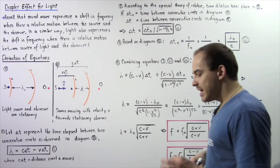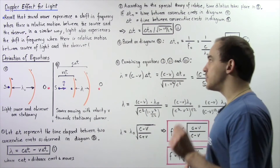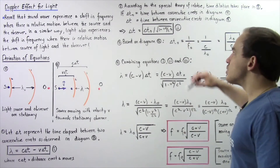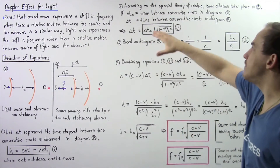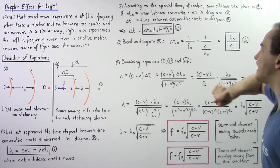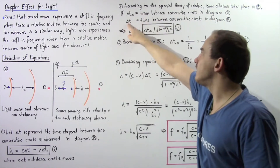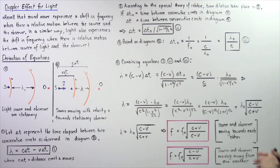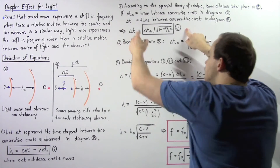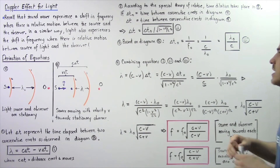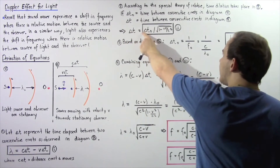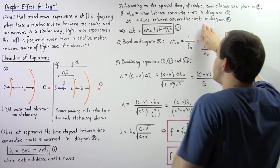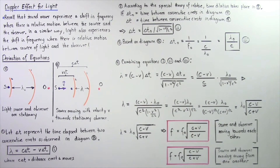Moving on to Step 2: based on the special theory of relativity, time dilation will take place in Diagram B. If we let delta T0 be the time interval between the two consecutive crests in Diagram B, then we can use the time dilation equation: delta T is equal to delta T0 divided by the square root of 1 minus V squared divided by C squared. Let's call this Equation 2i.